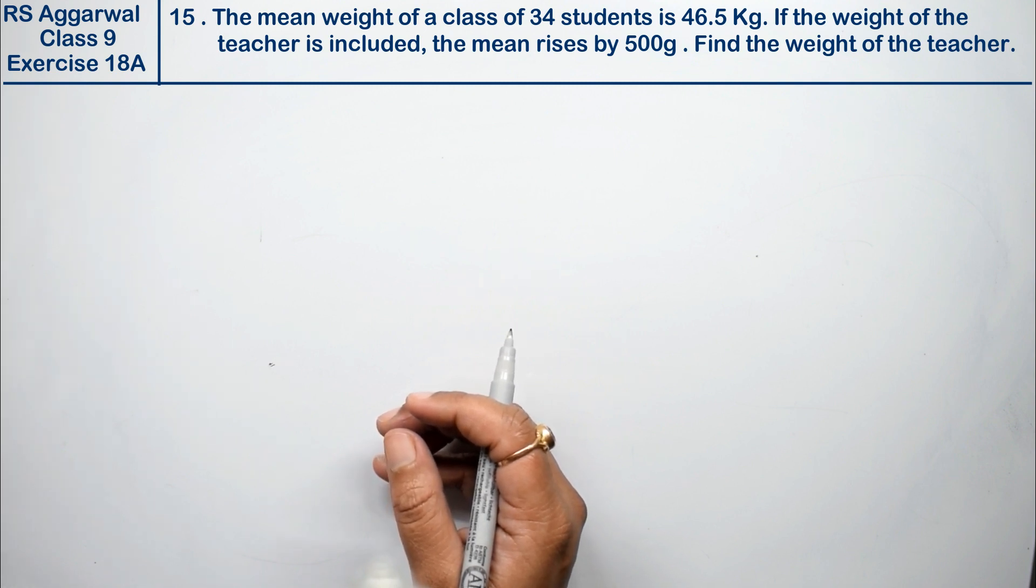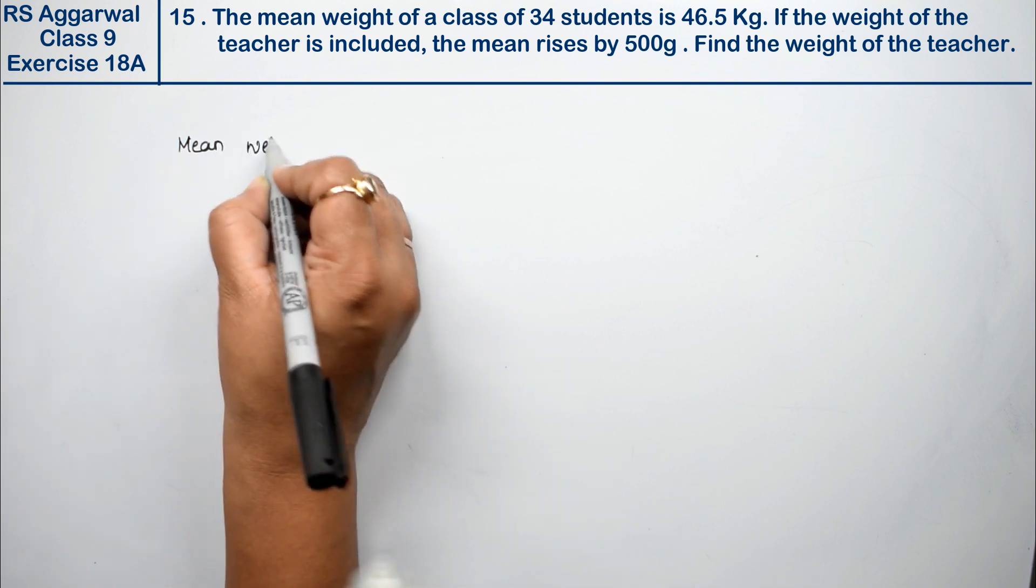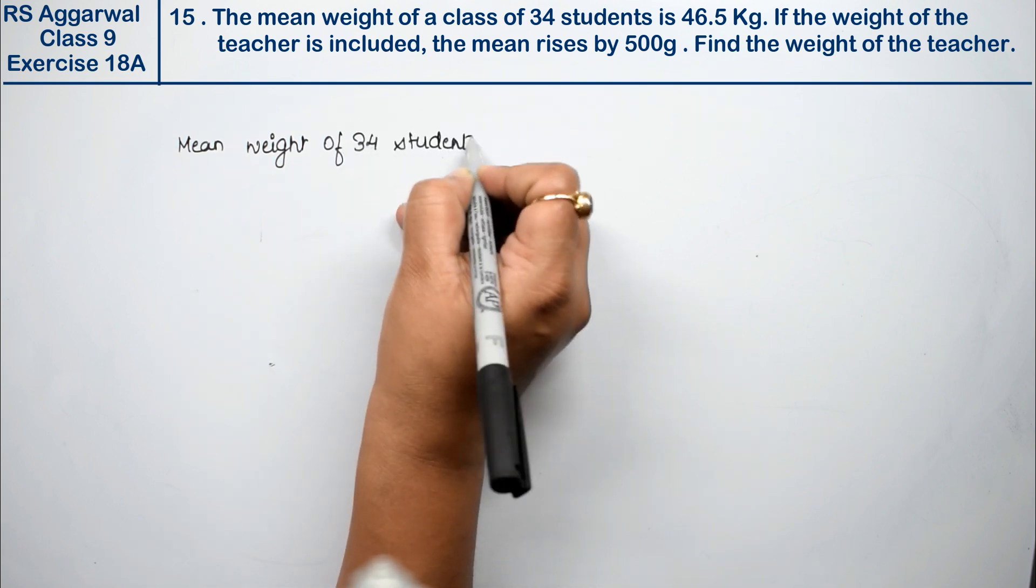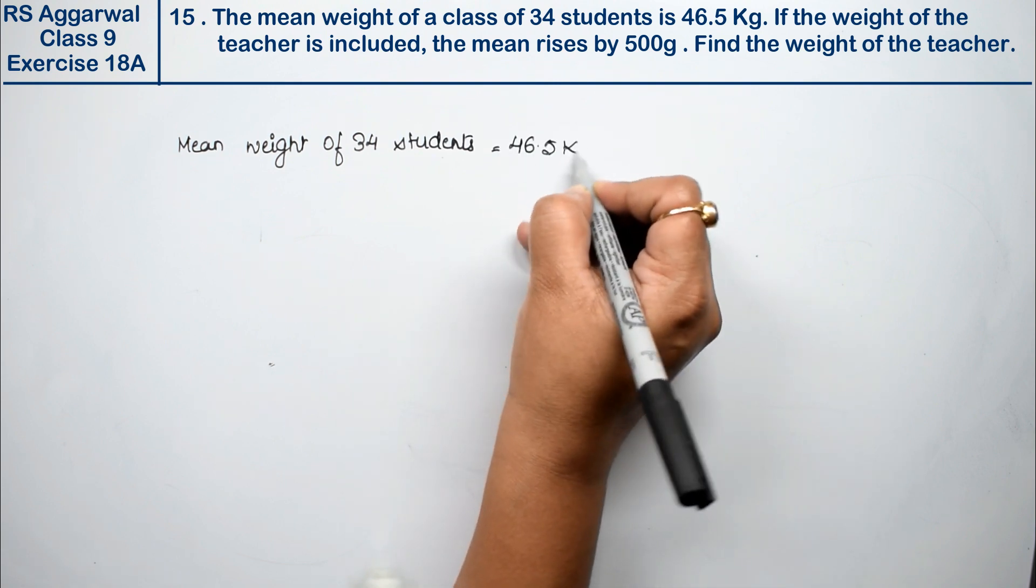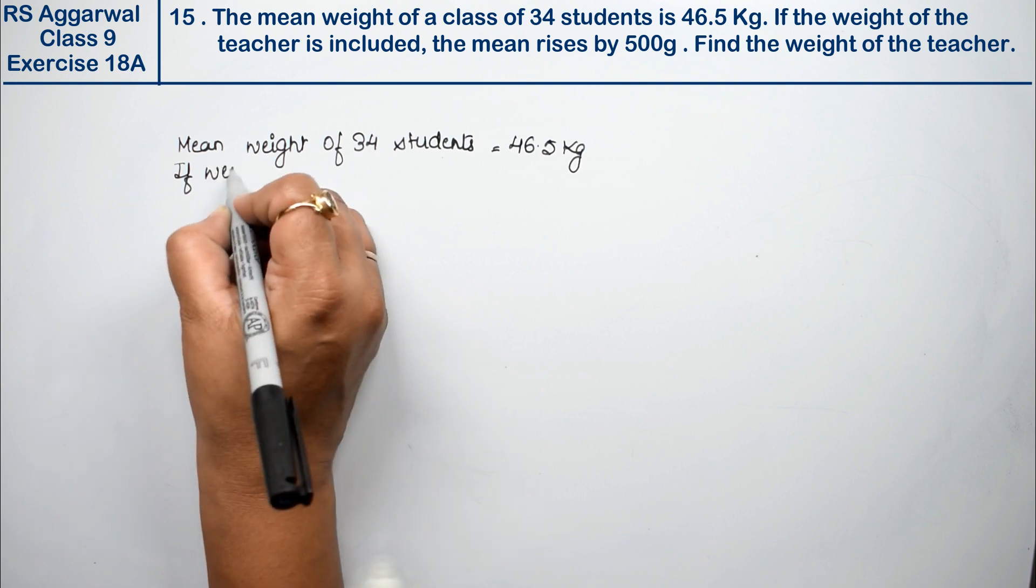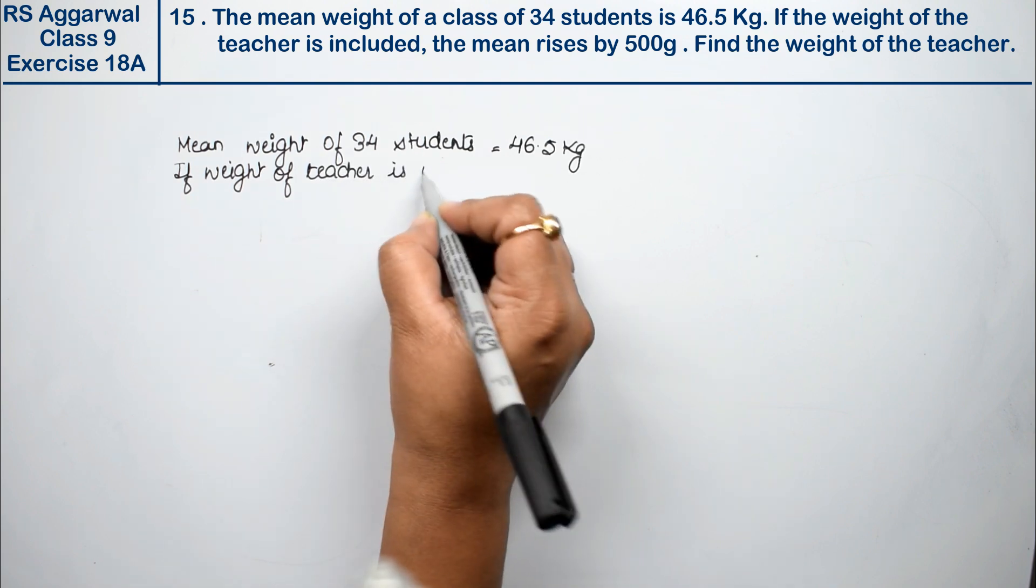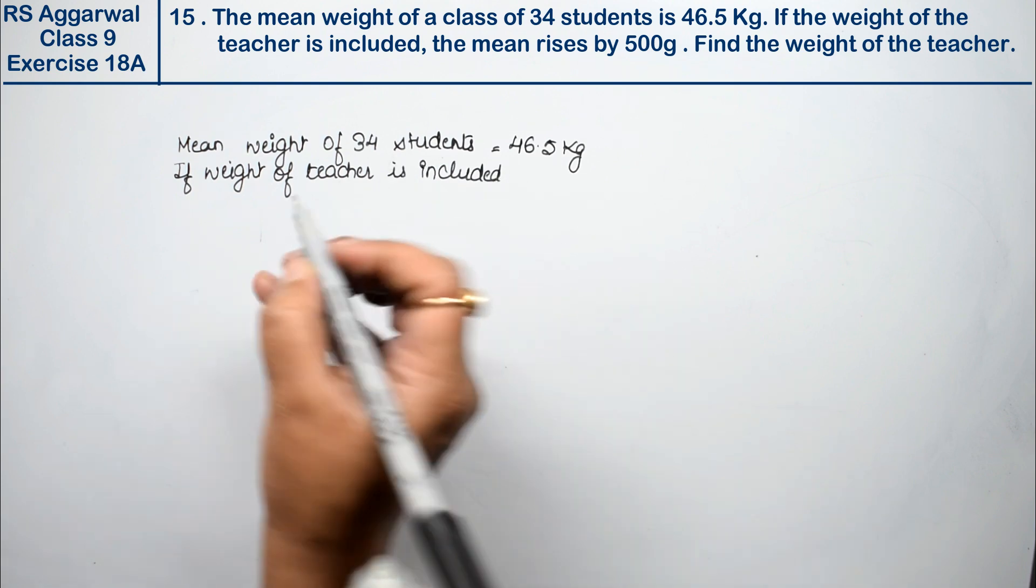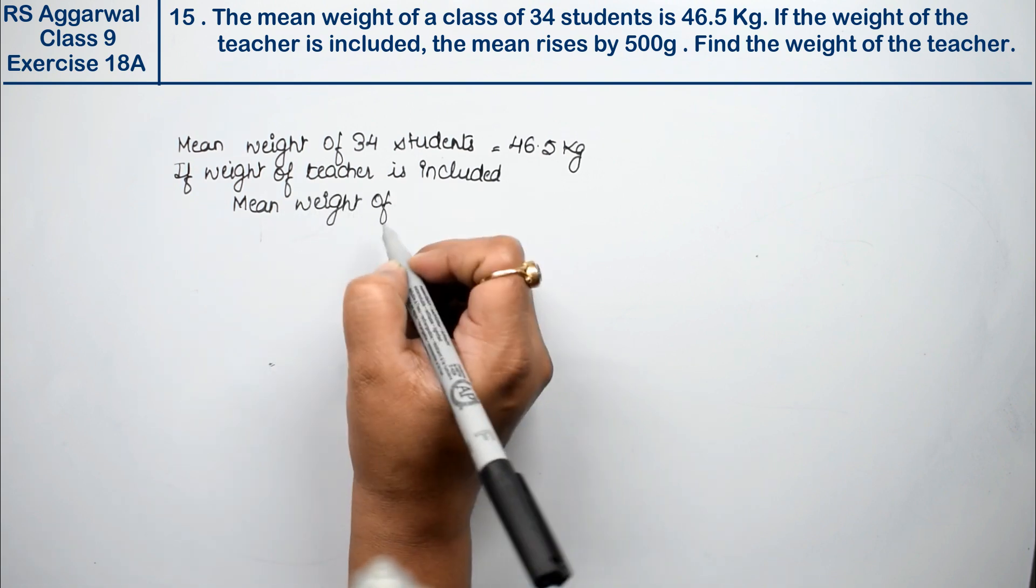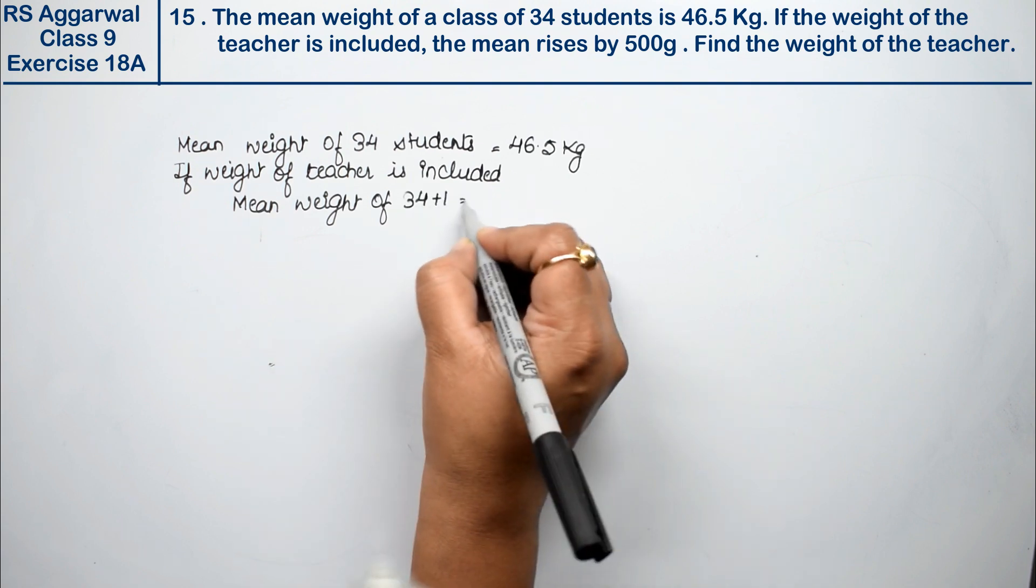Here we can find the weight of the teacher. How much is the mean weight of 34 students? Mean weight of 34 students. We can find the weight of the teacher. If the weight of the teacher is included, 34 students plus 1 teacher, 34 plus 1 that is 35.